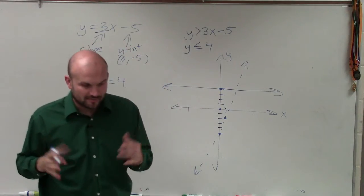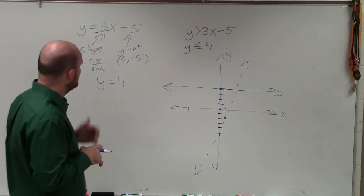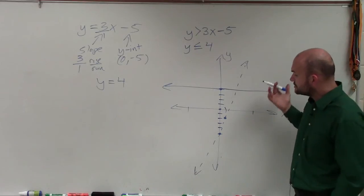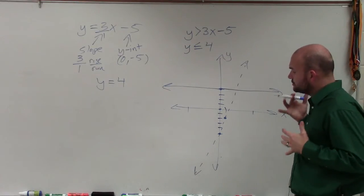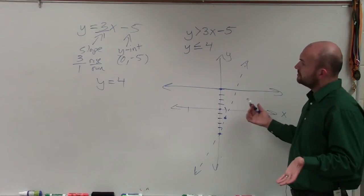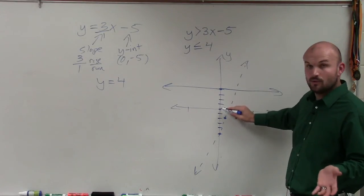Now let's get into the shading, the fun part. And when looking in the shading, basically what we're going to do is we want to choose a test point. And the best test point that I like to use, as long as my two boundary lines do not go through the line, is (0, 0). And all I'm really going to do is plug in 0 and 0 in for x and y.